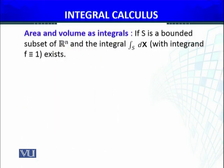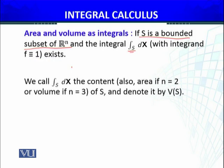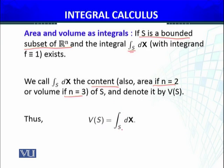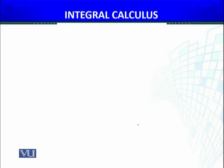Area and volume as integrals: if S is a bounded subset of Rⁿ and the integral over the surface S with integrand f equals 1 exists, we call the integral ∫_S dx the content — also called area in case n = 2, or volume in case n = 3 — of S, denoted by V(S). Thus V(S) = ∫_S dx.